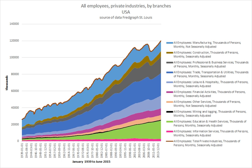Scholars conceptualize the employment relationship in various ways. A key assumption is the extent to which the employment relationship necessarily includes conflicts of interests between employers and employees, and the form of such conflicts. In economic theorizing, the labor market mediates all such conflicts such that employers and employees who enter into an employment relationship are assumed to find this arrangement in their own self-interest. In human resource management theorizing, employers and employees are assumed to have shared interests or a unity of interests, hence the label unitarism. Any conflicts that exist are seen as a manifestation of poor human resource management policies or interpersonal clashes such as personality conflicts, both of which can and should be managed away.